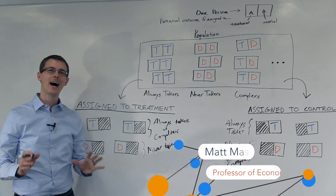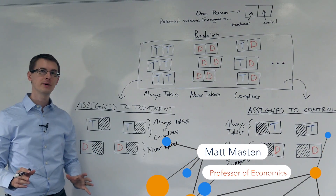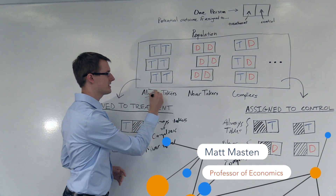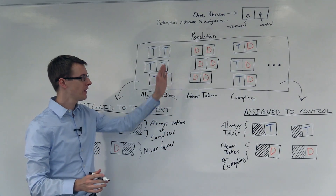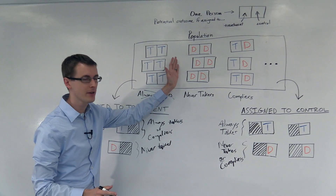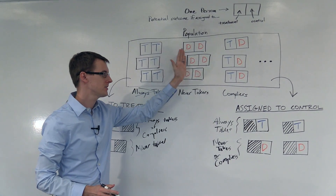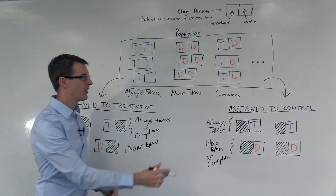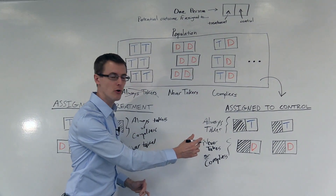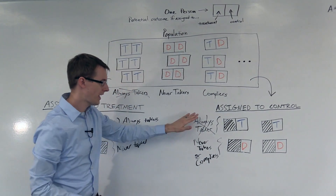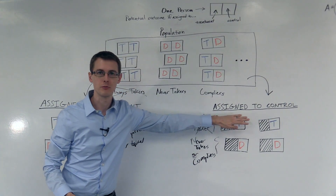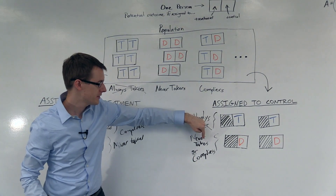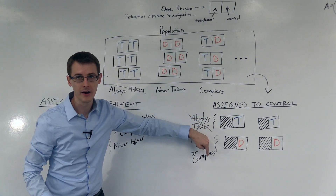Just for simplicity, I'm going to assume that there are no always-takers in the population — that we only have never-takers and compliers. That means over here in the control group, we don't have that first group. There are no always-takers. Everybody is either a never-taker or a complier.